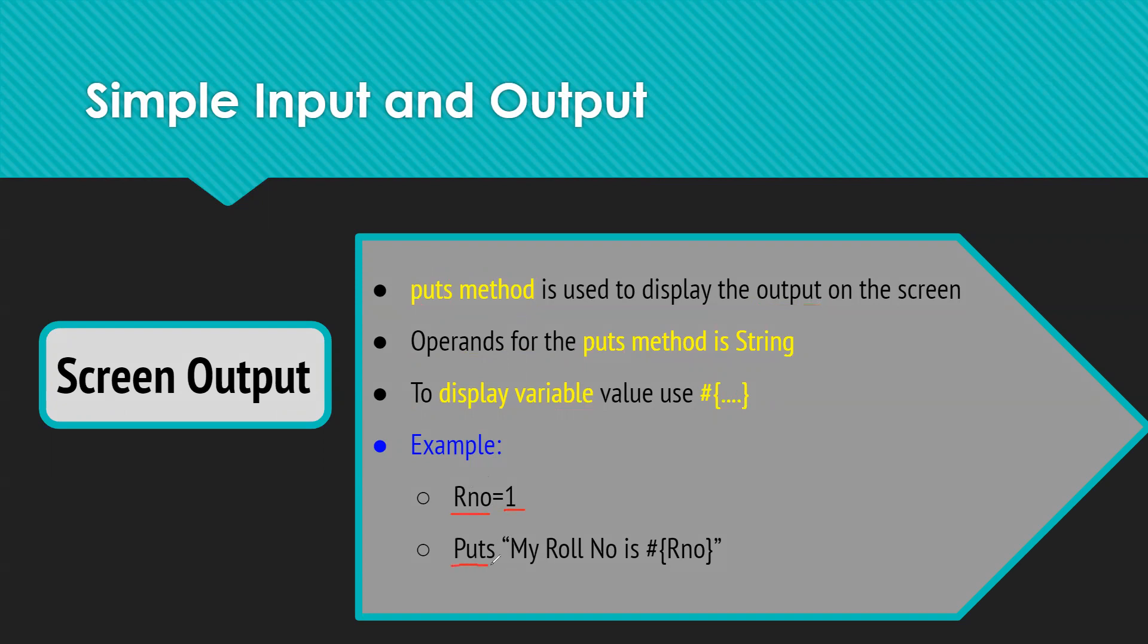So here we are using the puts method. Enclose in a double quote whatever the message you want to print, like 'my role number is', and you want to print the value of this role number. As it is stored in a variable, we are using the role number variable, but it is going to be enclosed in hash and curly bracket. So this is how you can give the output to the user, string as well as variable.